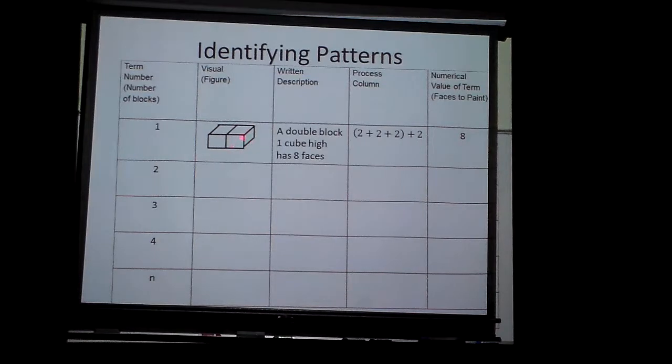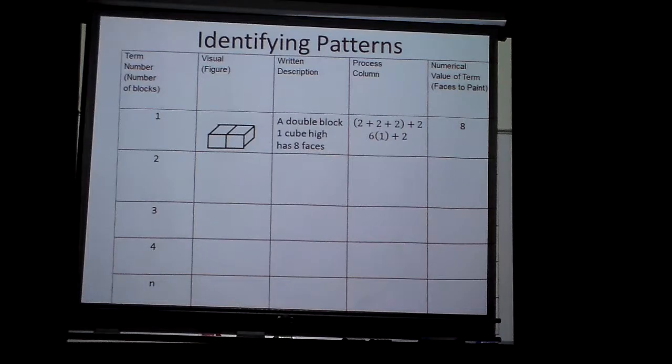Now I thought of it this way. Two here, two on the back, the two on the ends, and then two on top. Notice I have this two plus two plus two. What's two plus two plus two? Six. And kind of going with my thought from the other particular screen, I'm going to have six on the side every time and two on the top to make eight.